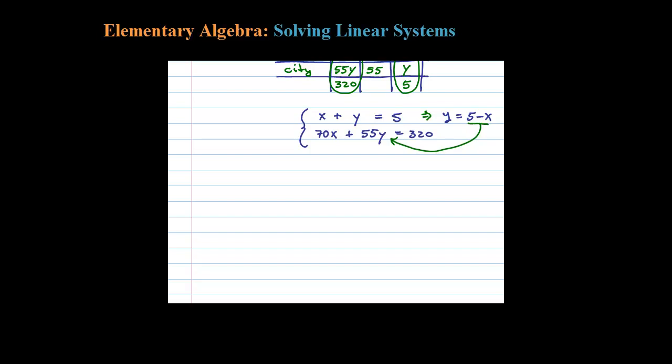And then let's take that Y and substitute it into the other equation. So for our substitution step we would have 70X plus 55 times that Y is equal to 320, in which I'm going to substitute 5 minus X. There's only one variable X, we should be able to solve for that now. So 55 times 5 is 275 minus 55X, well that's supposed to equal 320.